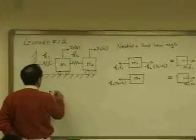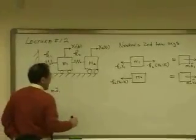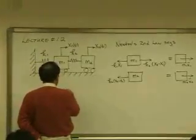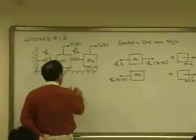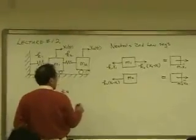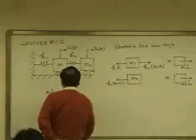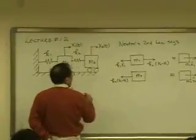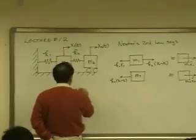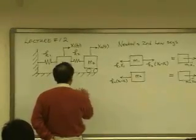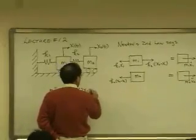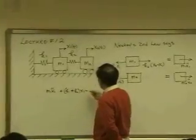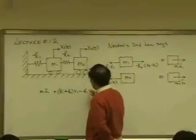M1, X1 double dot, and then I have plus K1, X1 — okay? Then K1 plus K2, X1, minus K2, X2.